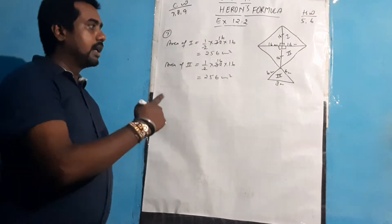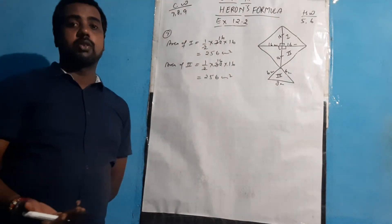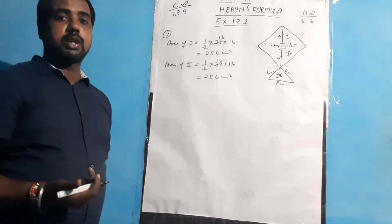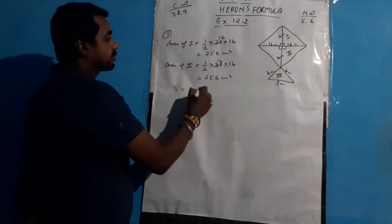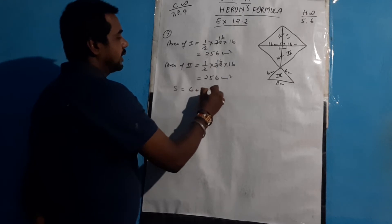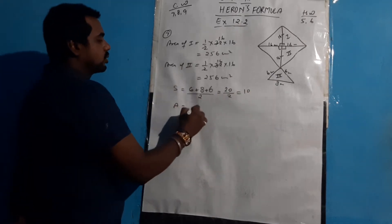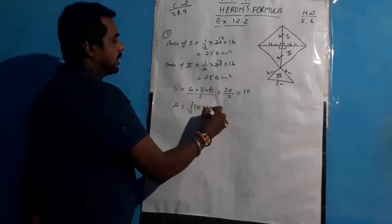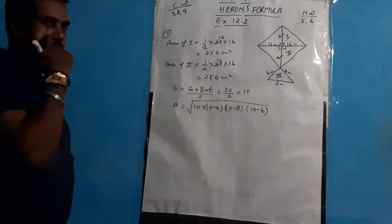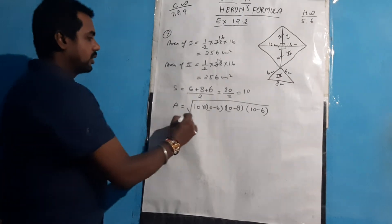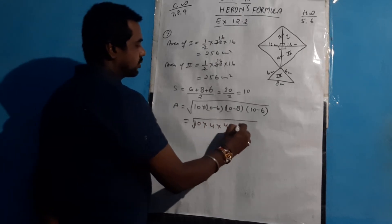The third part is an isosceles triangle. Even if you don't know the specific formula for an isosceles triangle, Heron's formula is applicable when all three sides are given. So we will use Heron's formula. First, we find the semi-perimeter: s = (6 + 8 + 6) / 2 = 20 / 2 = 10.